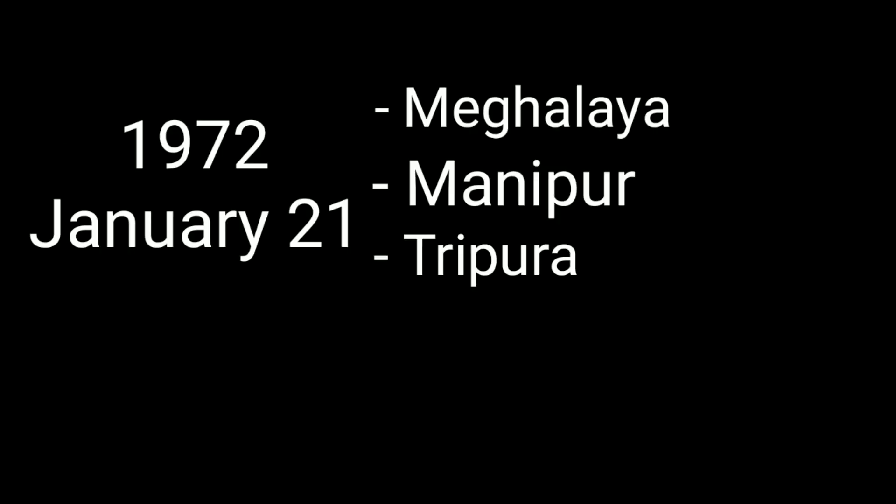On January 21, 1972, three states were formed: Meghalaya, Manipur, and Tripura. Meghalaya was formed from Assam, while Manipur and Tripura were previously Union Territories.